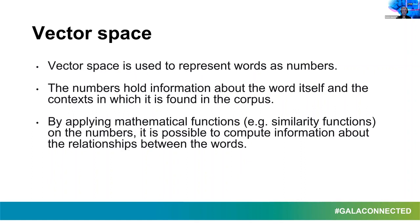So that's the basic idea: we convert words to numbers, and those numbers hold information about the word and the context in which the word appeared in the corpus. Why do we convert words to numbers? Mathematicians and computer scientists like to work with numbers because they know a lot of mathematical functions that can be applied to numbers. Those functions can compute the similarity between numbers, and if we apply these functions to numbers representing words, we can actually calculate the similarity of words.